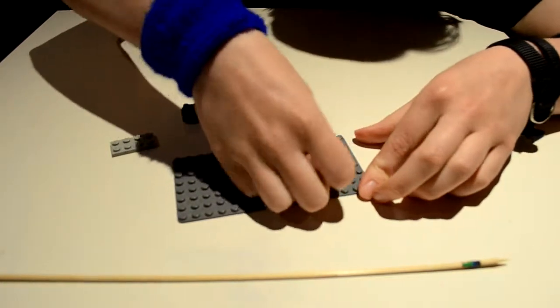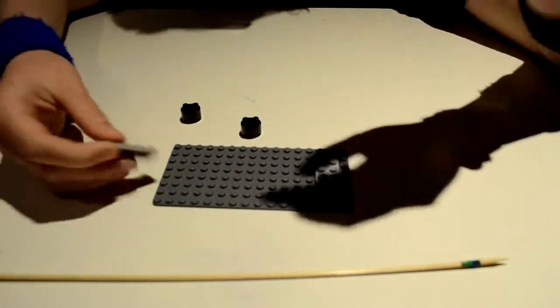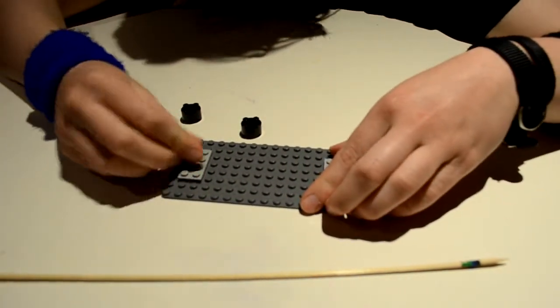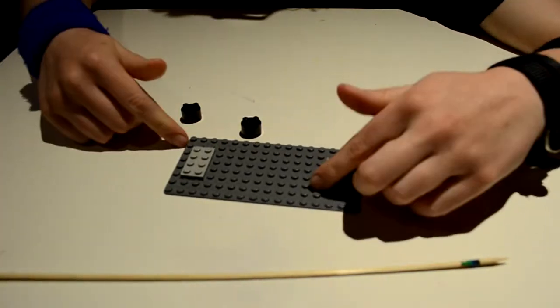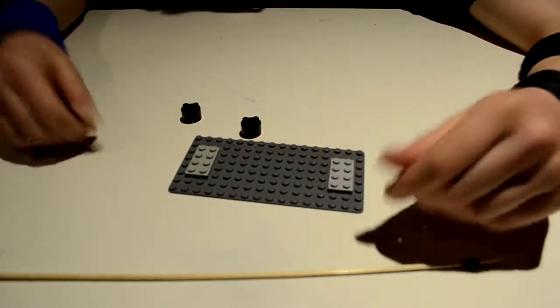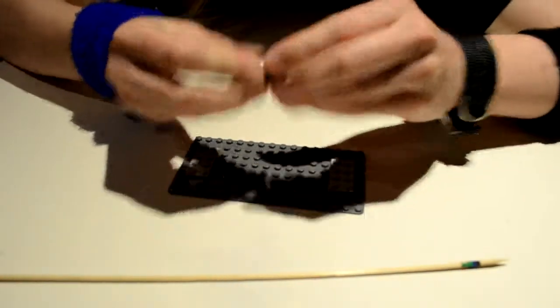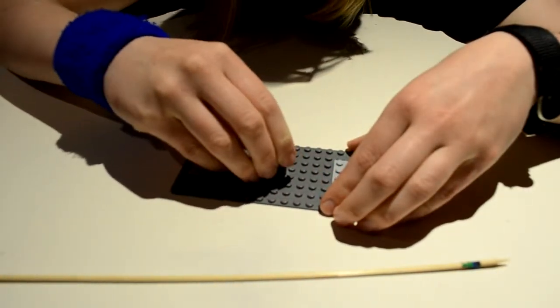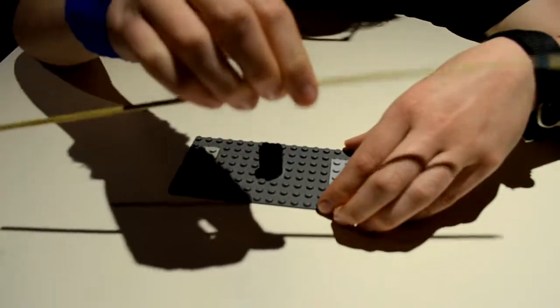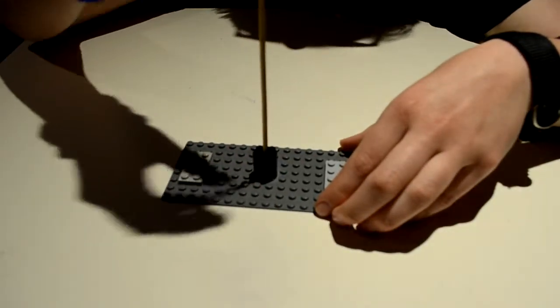So what these are going to do is raise the bases off the base so it looks sexier, pretty much. I'm going to take two of these, put those together, put that in the middle, and take your bamboo skewer and stick it right in the middle.